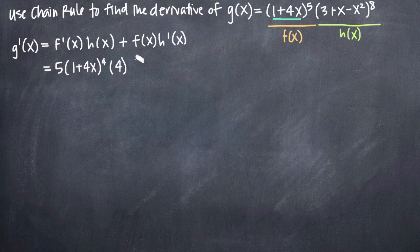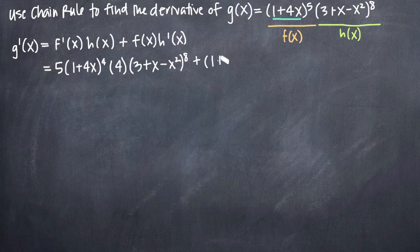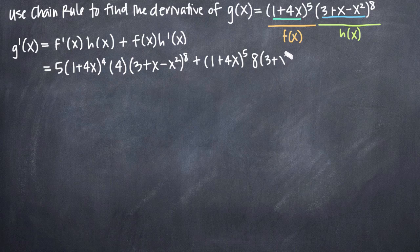But now we need to multiply by h of x, which is the quantity 3 plus x minus x squared, all to the 8th. For the f of x times h prime of x part of our product rule formula, we put in f of x, which is the quantity 1 plus 4x to the 5th. Now we need to take the derivative of h of x. We'll do the same thing — ignore the inside function, which is 3 plus x minus x squared, treat it as if it were just x, and use the power rule to bring the 8 out in front, subtracting 1 from the exponent to get 7.